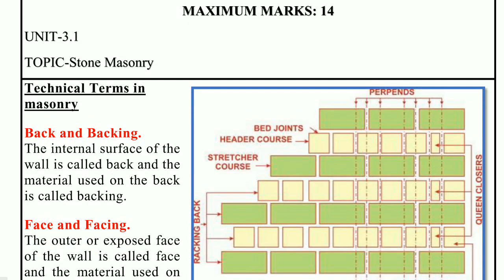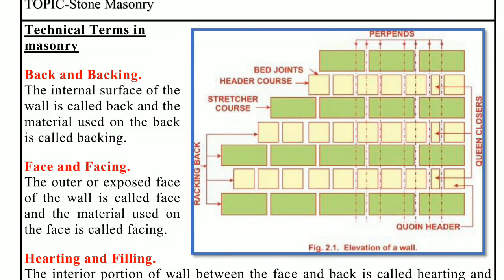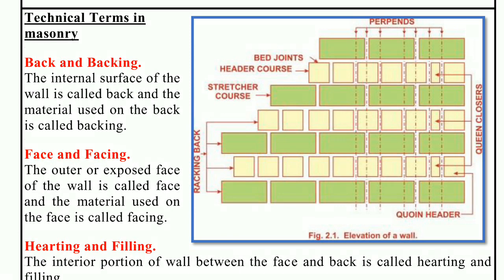Let us start with some technical terms which are used in stone masonry. First, the natural bed. The building stones are obtained from rocks, and these rocks have a distinct plane of division along which the stones can easily be split. This plane represents the natural bed.